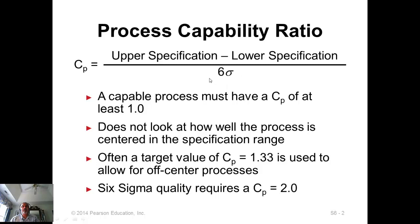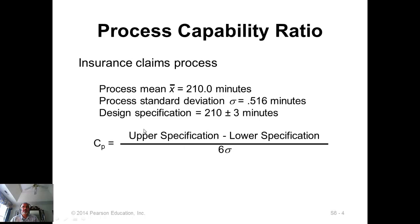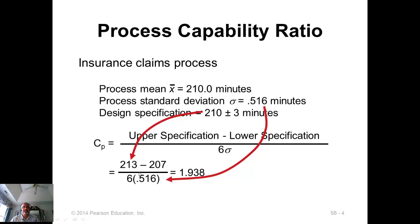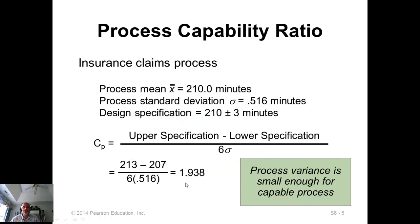This ratio talks only about the process variance — it is not about whether the process is capable or not, but whether the process variance is small enough for the process to be capable. So if it is 1.33 or more, then the process variance is small enough. Here is an example: take the upper specification minus the lower specification limit and divide by six times the process standard deviation. This gives 1.938, so the process variance is small enough for the process to be capable.